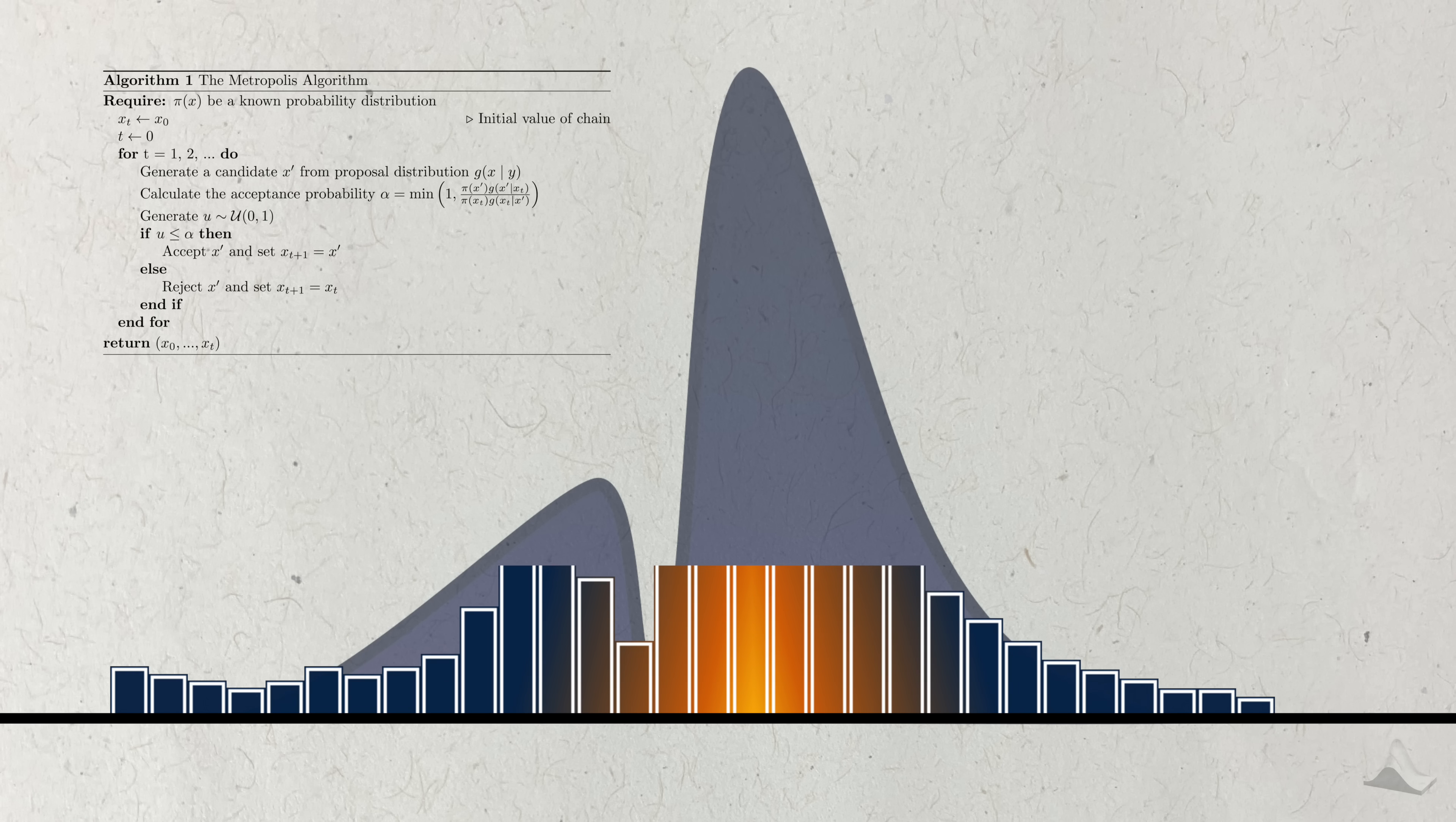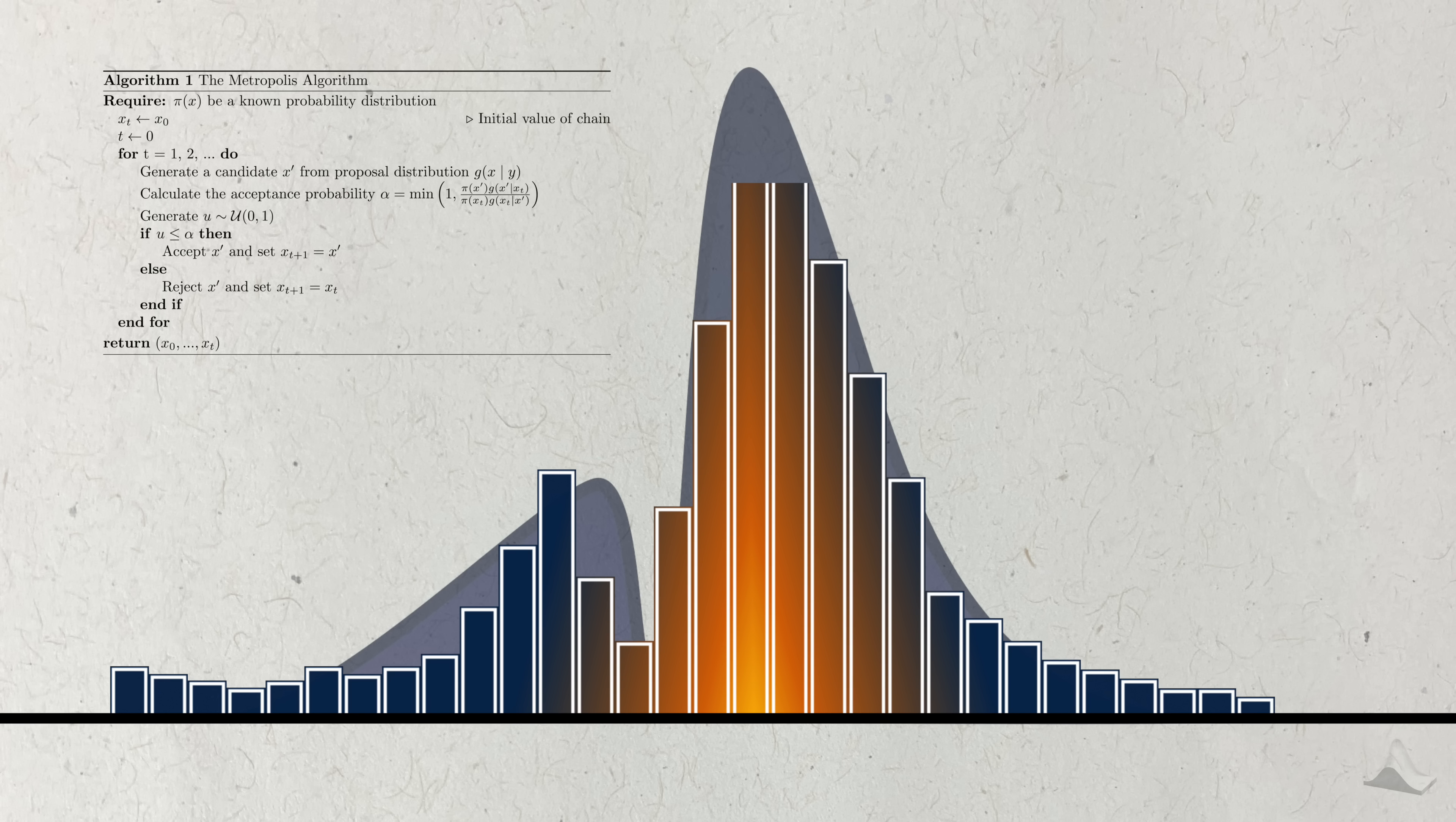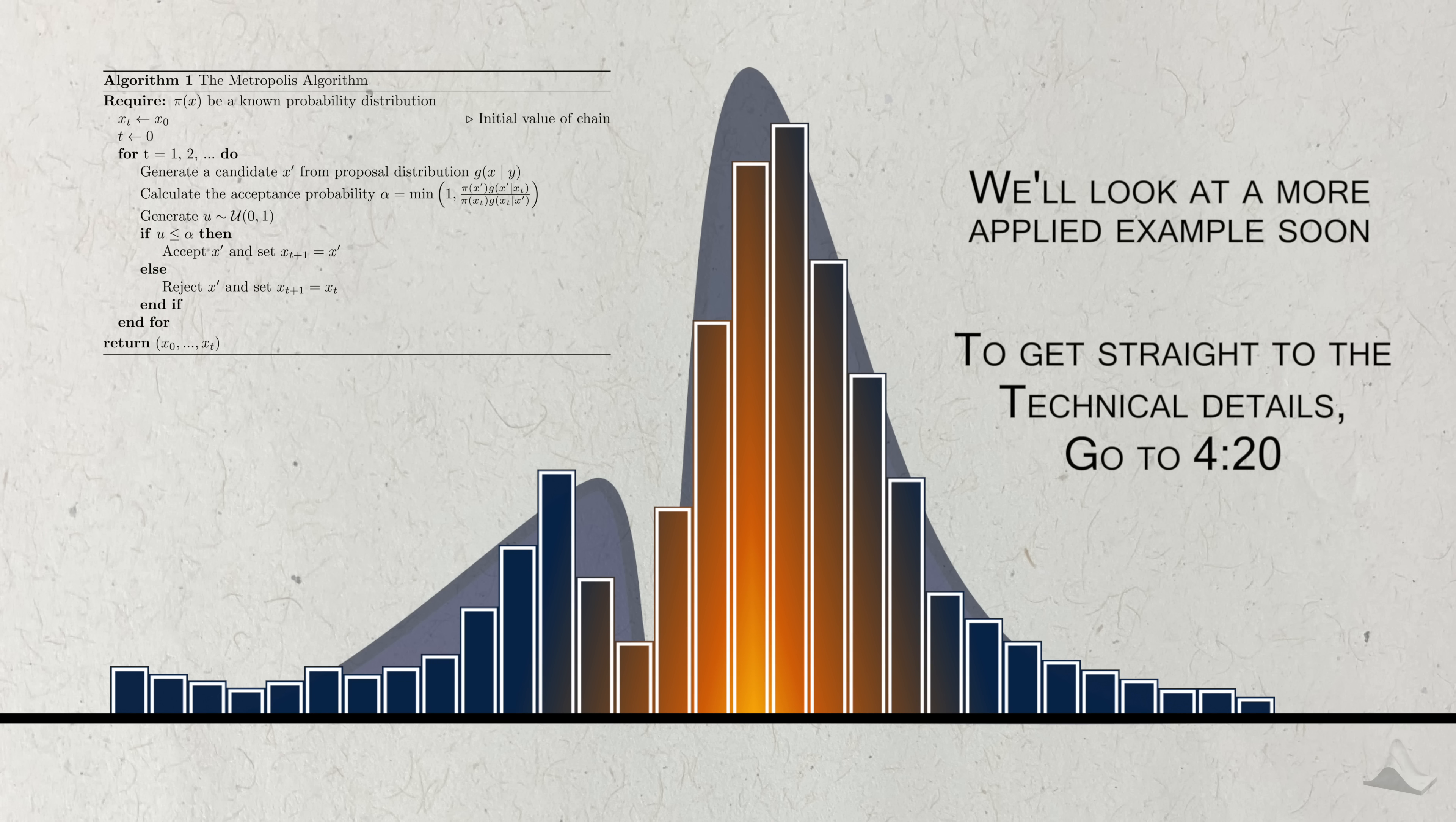And after that, you repeat this entire process using this new point as the basis. And somehow, someway, the sample you get will start to look like the probability distribution you wanted. If that's still confusing to you, don't worry. I'll walk through a more applied example of how the algorithm works. But if you want to see right away how the algorithm works, you can go to this timestamp here.